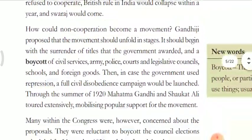How could non-cooperation become a movement? Gandhiji proposed that the movement should unfold in stages. It should begin with the surrender of titles that the government awarded, and a boycott of civil services like the army, police, courts, legislative councils, schools, and foreign goods. Then, in case the government used repression, a civil disobedience campaign would be launched.